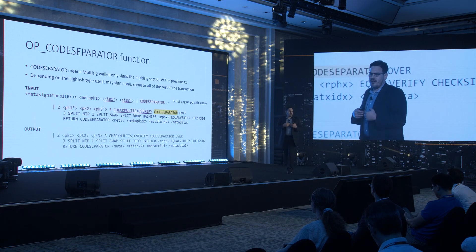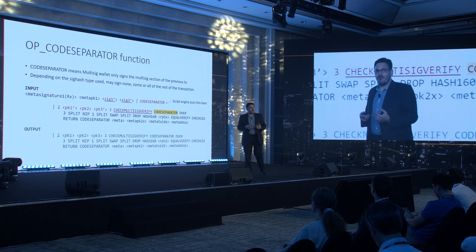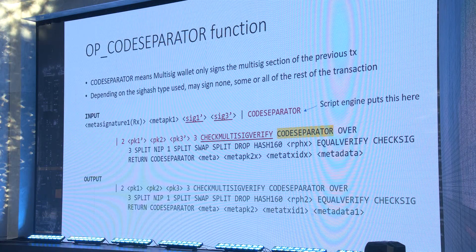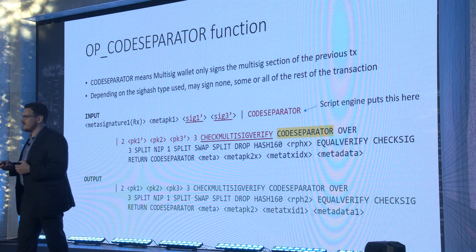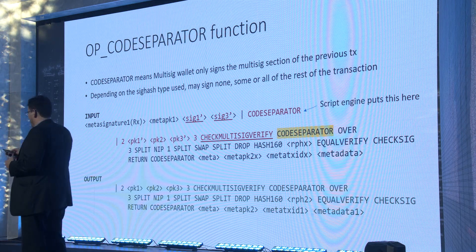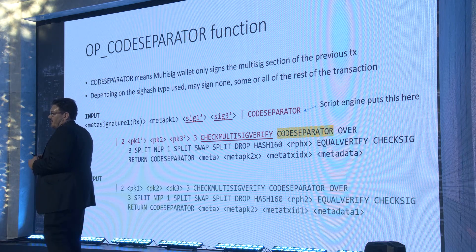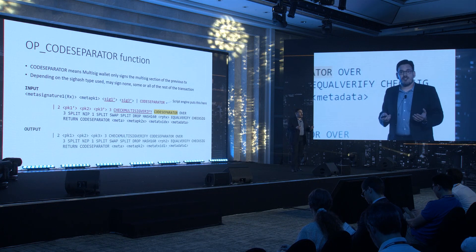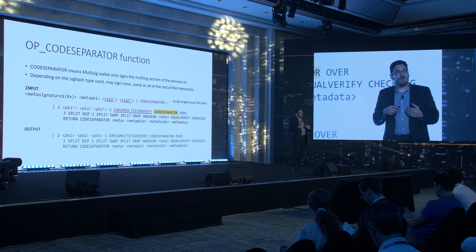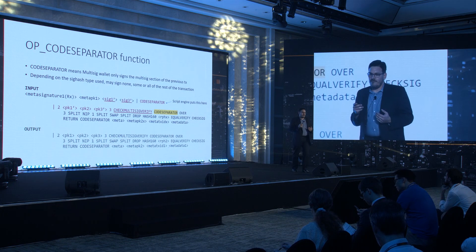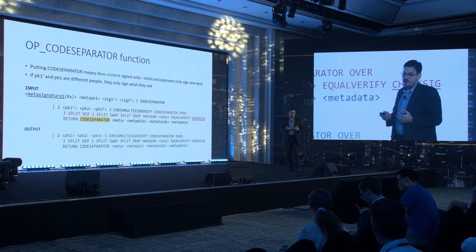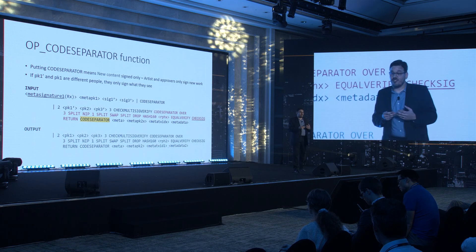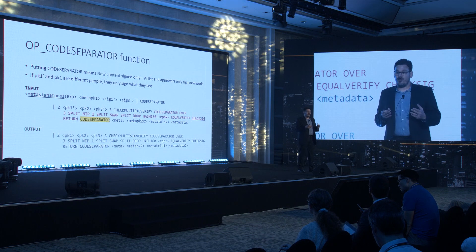By inserting code separators into this script, we can now isolate pieces of the script pub key, allowing each signing party to specifically select what piece of the input they want to sign. In this example, the two parties providing signatures for the multi-signature approval process only sign the part of the input relating to their signature, which is shown in red. This means that the MetaNet data contained within the UTXO that is being spent is excluded from the message hash that they sign. The second code separator allows the artist to sign their part of the script without having to re-sign the MetaNet node contained within the input that they are spending.